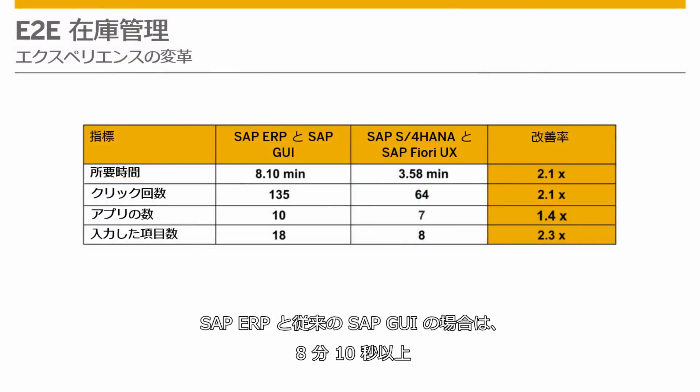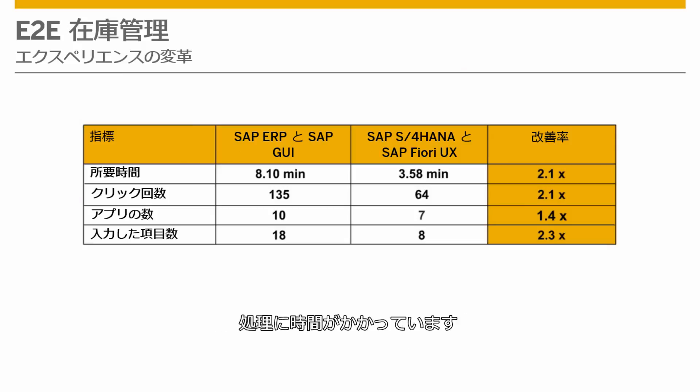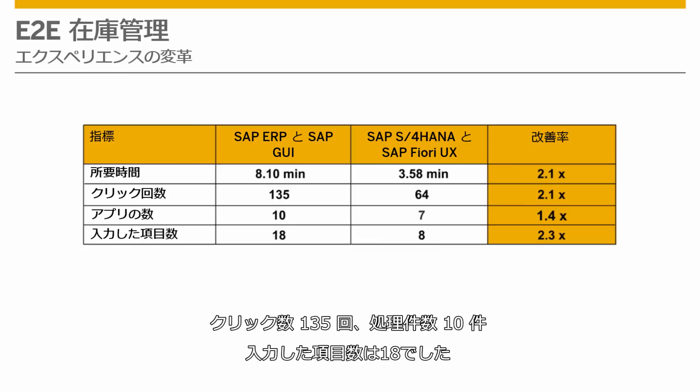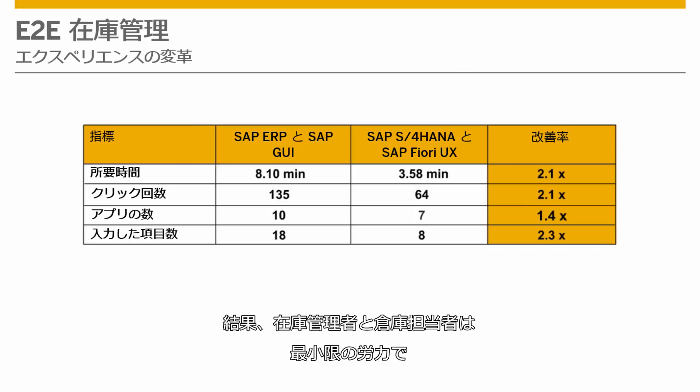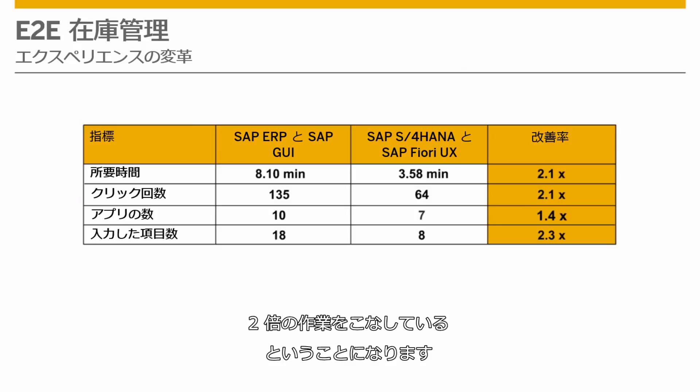With SAP ERP using traditional SAP GUI, the process takes more than 8 minutes and 10 seconds, with 135 clicks, 10 transactions, and 18 fields filled. The result? The inventory manager and warehouse clerk complete their tasks twice as fast with the least amount of effort.